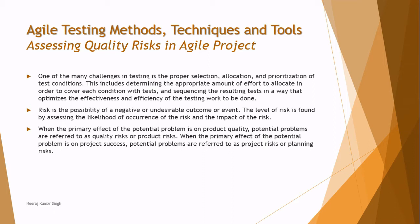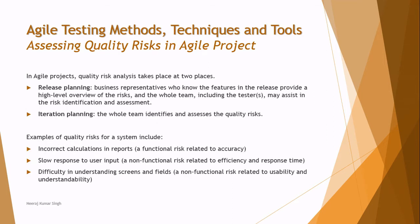We also learned about project risk and product risk at the foundation level. Project risks are related to your process — anything that could go wrong internally throughout the testing life cycle. Product risk, on the other hand, is something that happens post-release in the market and can impact the end user. Let's see how we manage project and product risk in agile.